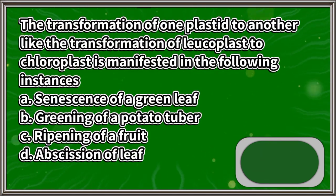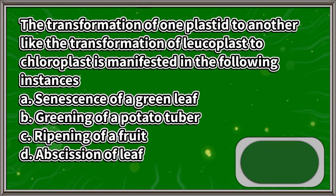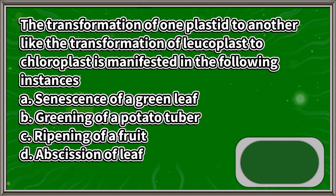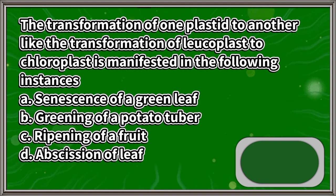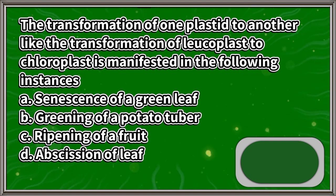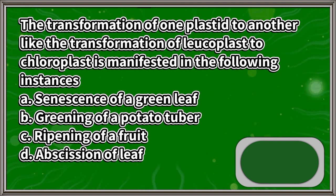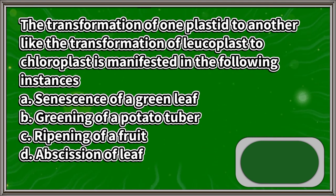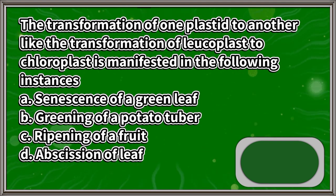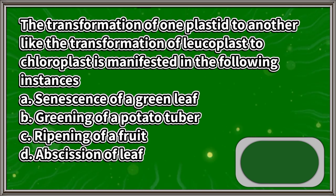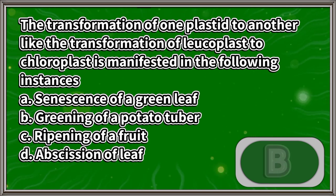The transformation of one plastid to another, like the transformation of leucoplast to chloroplast, is manifested in the following instances: A. Senescence of a green leaf, B. Greening of a potato tuber, C. Ripening of a fruit, D. Abscission of leaf. The answer is letter B.